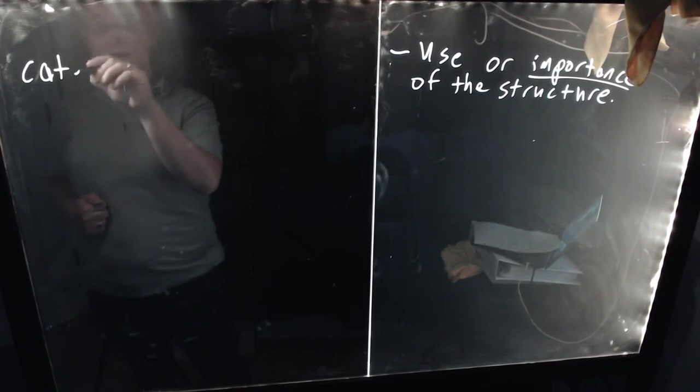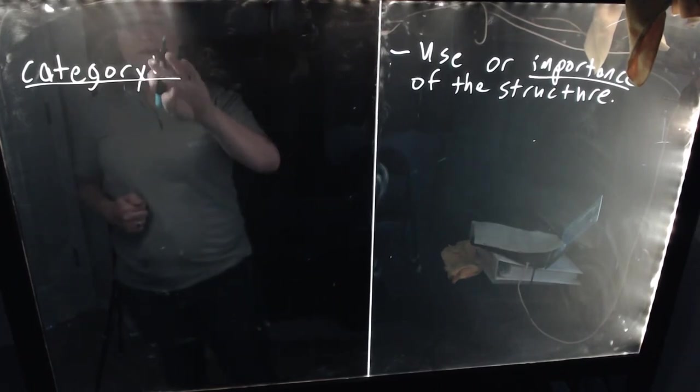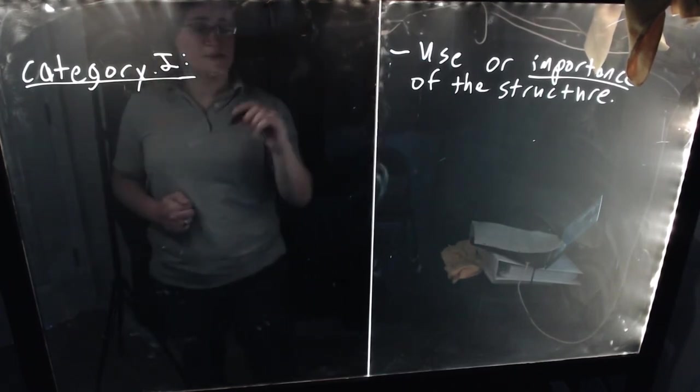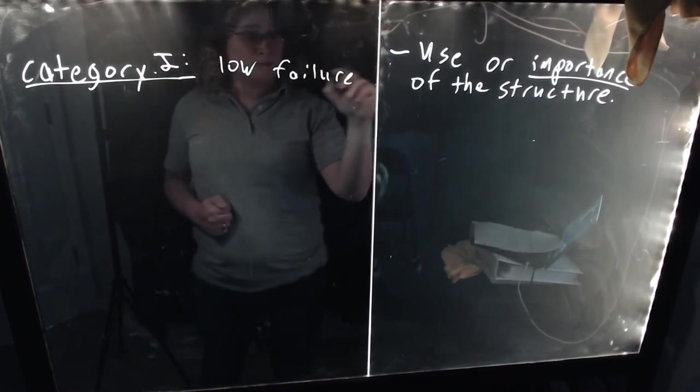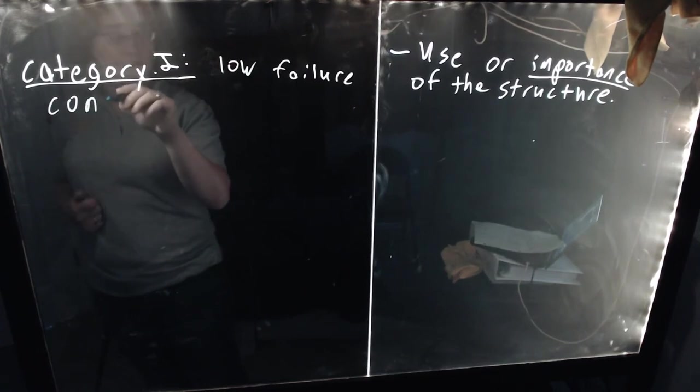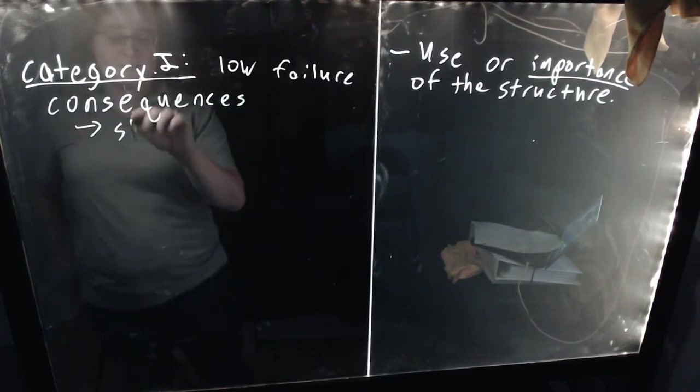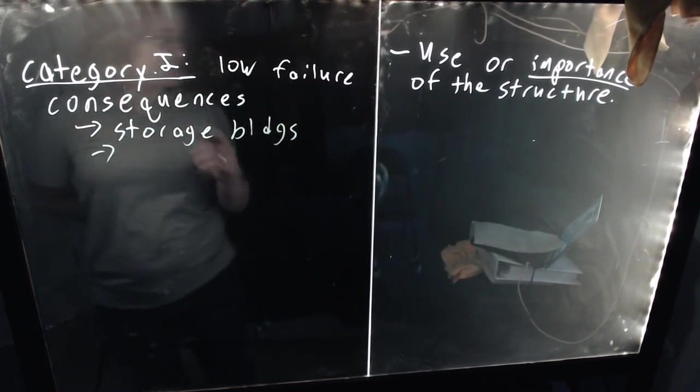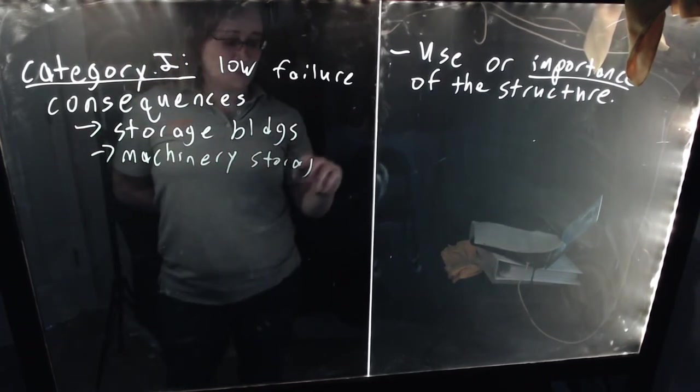First, we have Category I. Category I structures are those that have a low consequence of failure, low failure consequence. And when we say consequence, we're mainly talking about in the context of human life and safety. Think of things like storage buildings, machinery storage, like machine sheds on farms.